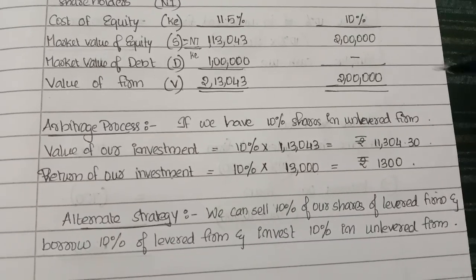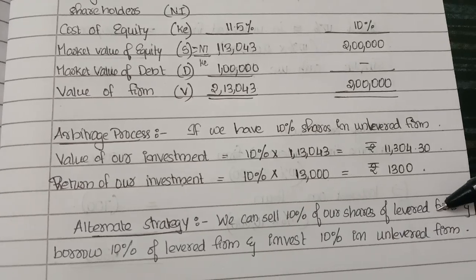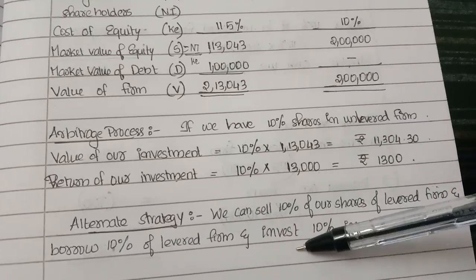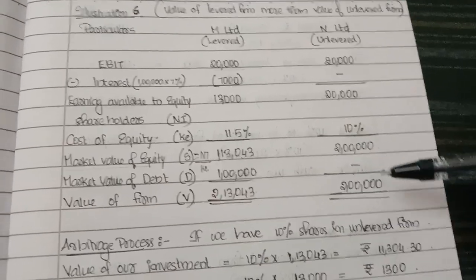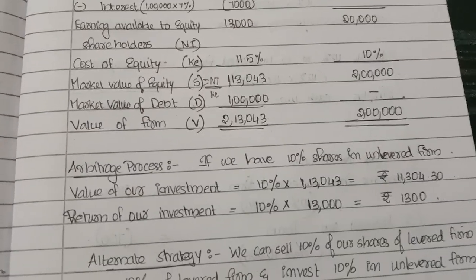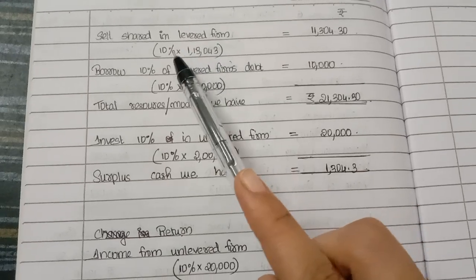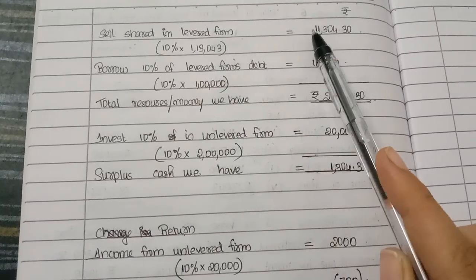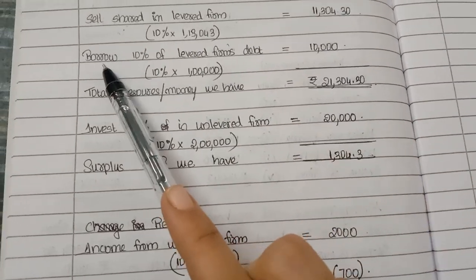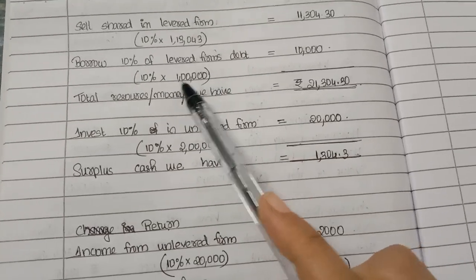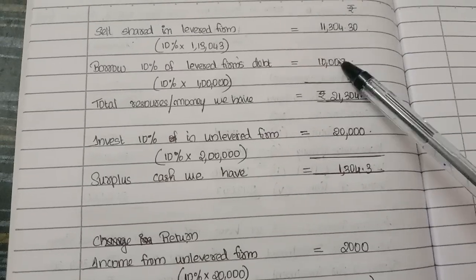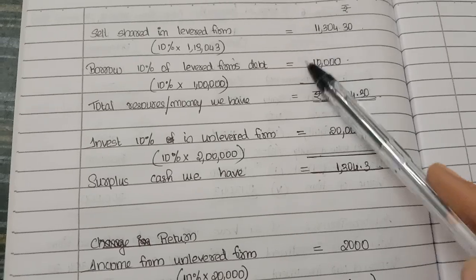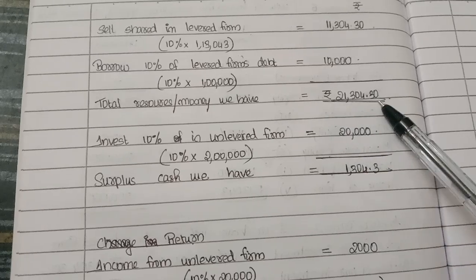The alternate strategy: we sell our 10% shares in the levered firm, borrow 10% of the levered firm's debt, and invest in the unlevered firm. Since the value of the levered firm is higher, we sell shares in the levered firm and borrow money to invest in the unlevered firm. Selling our 10% shares in the levered firm gives us 11,304.30 rupees. We then borrow 10% of the levered firm's debt, i.e., 10% of 1 lakh = 10,000 rupees. Total resources available = 11,304.30 + 10,000 = 21,304.30 rupees.